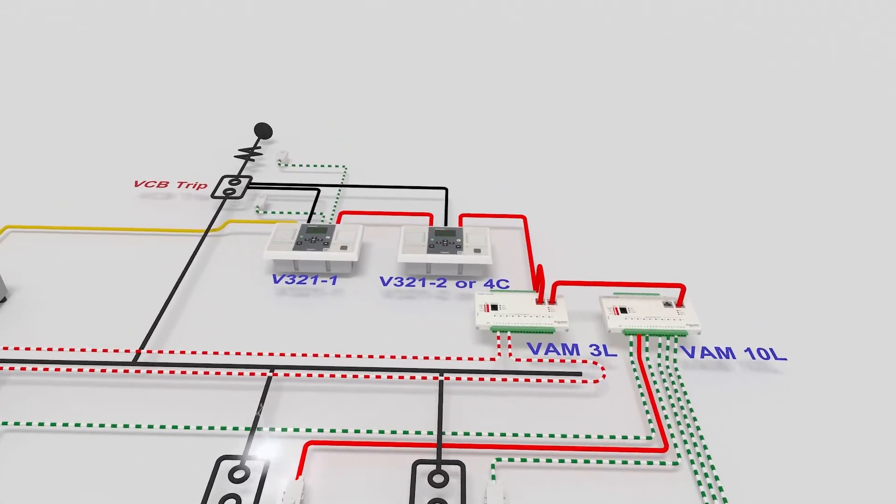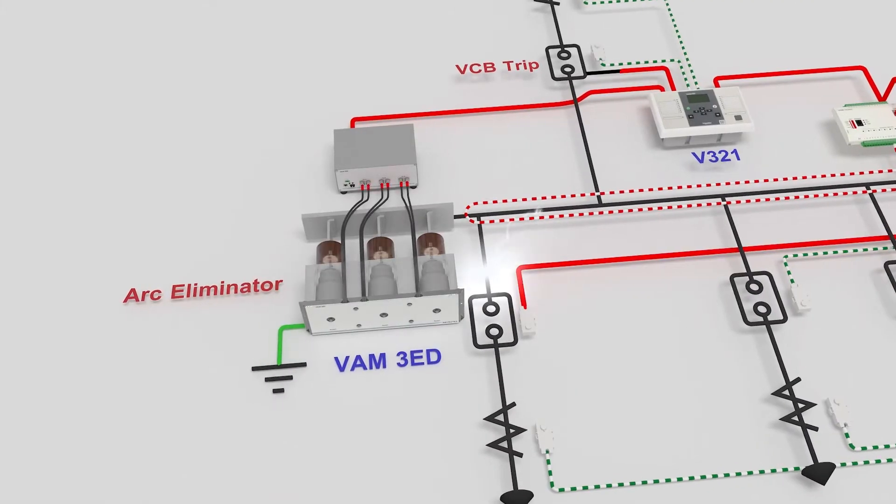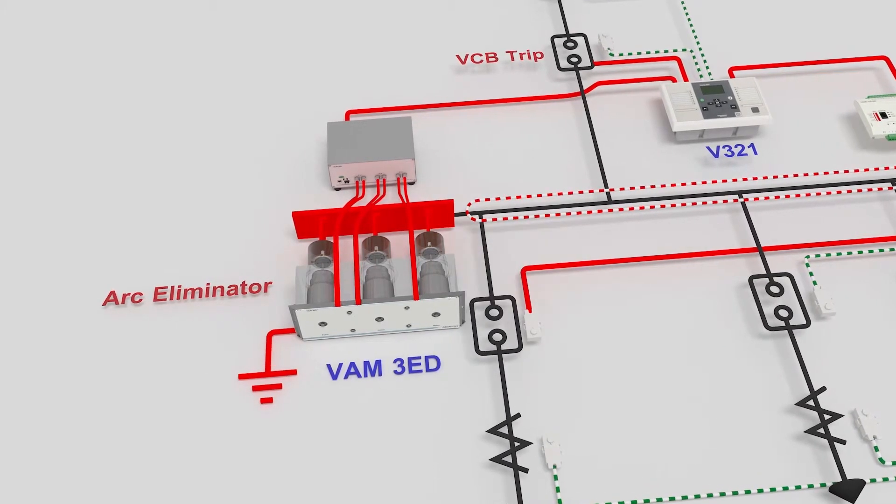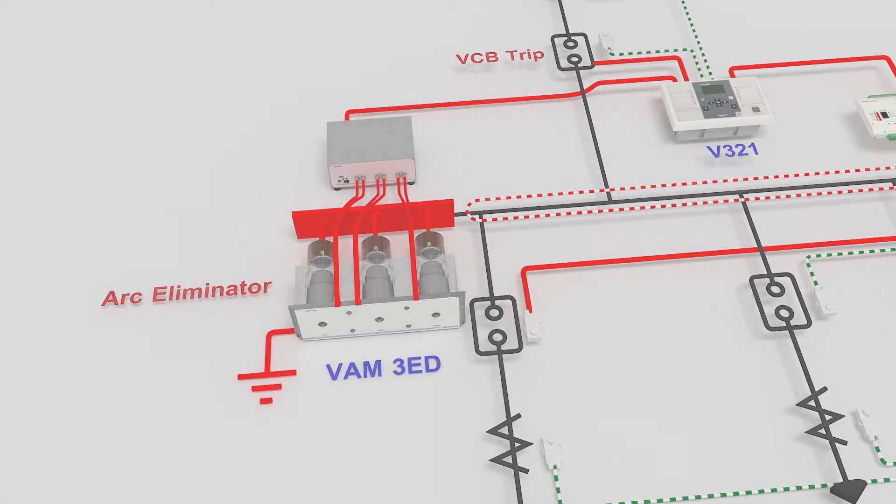By separately protecting the ground fault accompanying the arc at the three-phase short circuit accident, the arc eliminator can be selectively applied to minimize the impact on the power plant.